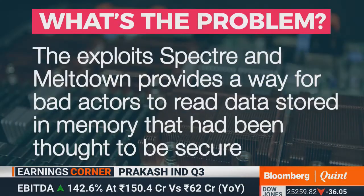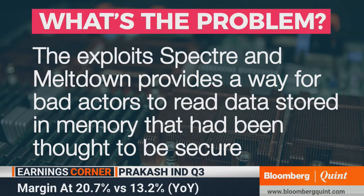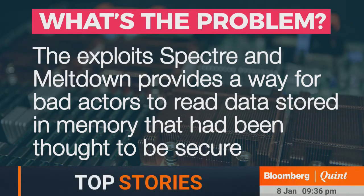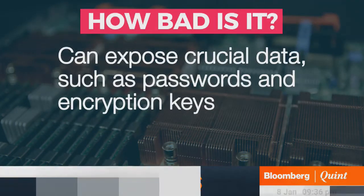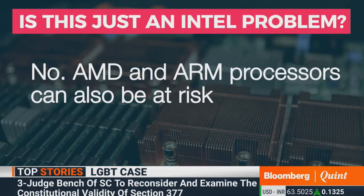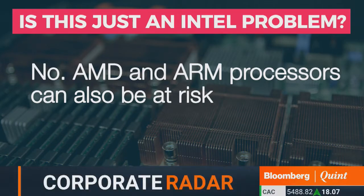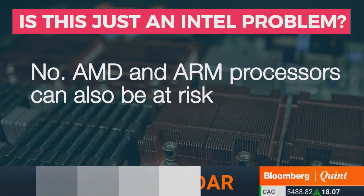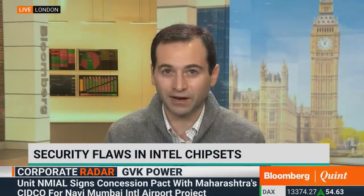What Meltdown and Spectre do is they found out that in some cases, the data that the processor had gone out and fetched under the speculative execution could be accessed and read by an attacker. So somebody could go into your computer, into the hardware, and actually figure out what that data was. And this could be passwords, this could be all kinds of sensitive information.